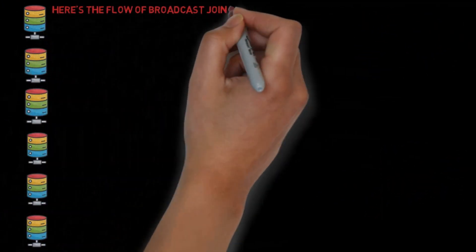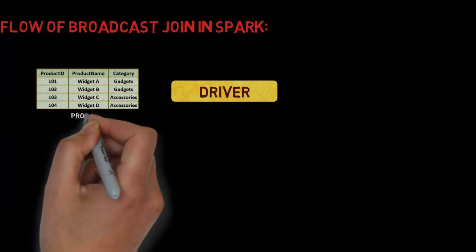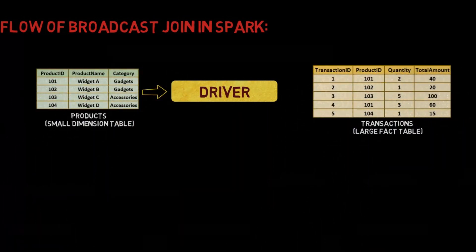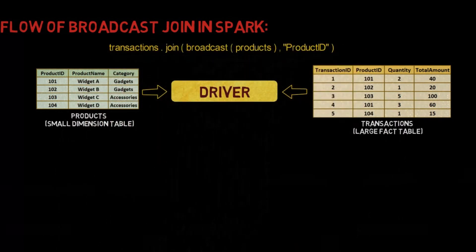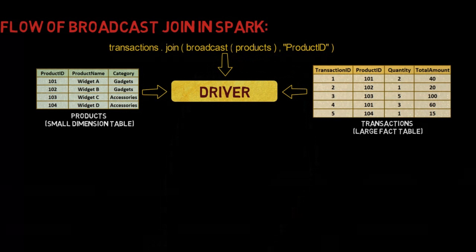Here's the flow of Broadcast Join in Spark. Spark loads the small dataset into the cluster. Spark loads the large dataset into the cluster. Spark checks if the small dataset is small enough to be broadcasted. Spark SQL automatically decides this based on a size threshold which can be configured.